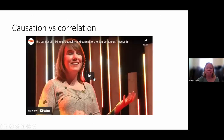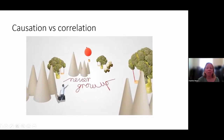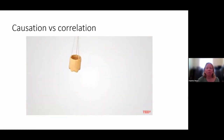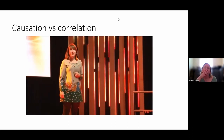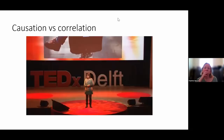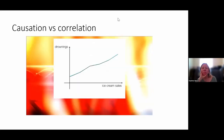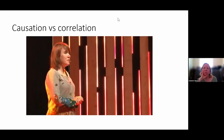Now a video about correlation versus causation. [Video narrator:] 'I came here today to warn you about the dangers of ice cream. These innocent-looking cones are one of the major causes of drownings, and I've got the numbers to prove it. If you plot the number of ice creams sold against the number of drownings, you can see there is clearly an upward trend, and I think it's very safe to conclude that we should ban ice cream because it's very dangerous.'